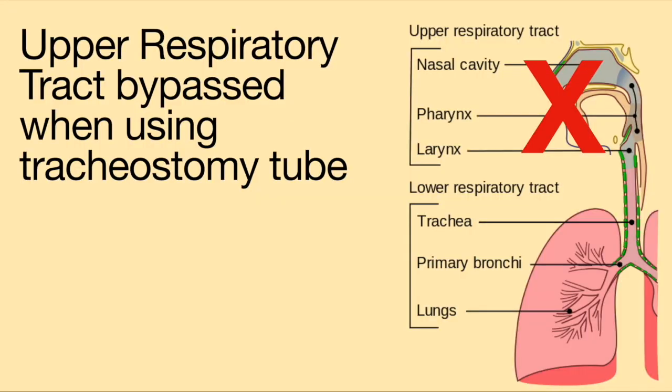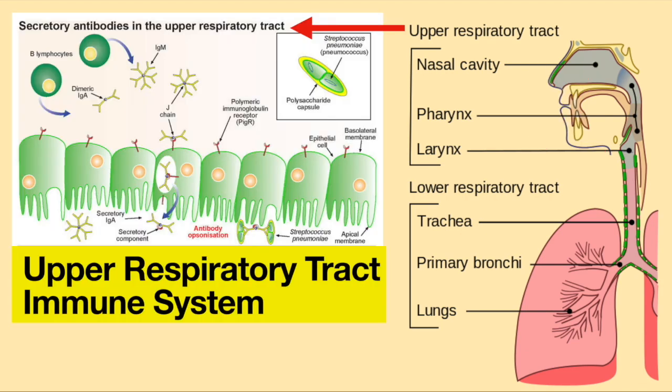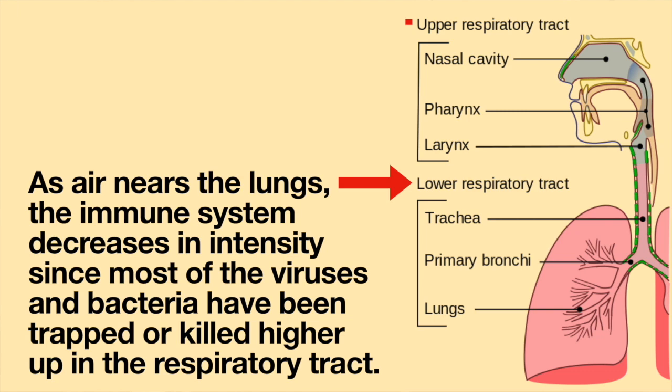Second, with a tracheostomy tube, the natural airway immune system is breached. Normally, air enters through the nose or mouth. As the air travels through the respiratory tract, there are many defense systems in place to stop bacteria and viruses. However, as the air enters the lungs, the immune system decreases in intensity since most of the viruses and bacteria have been trapped or killed higher up in the respiratory tract.